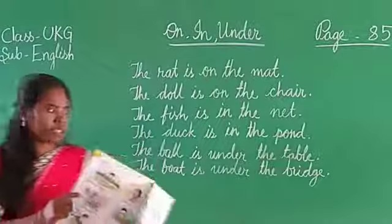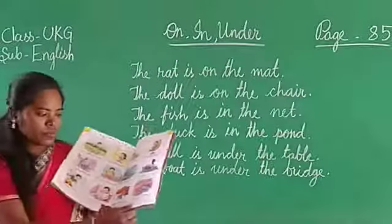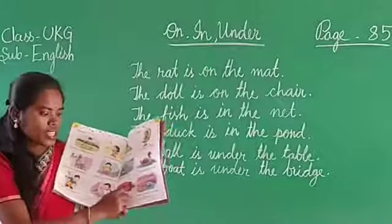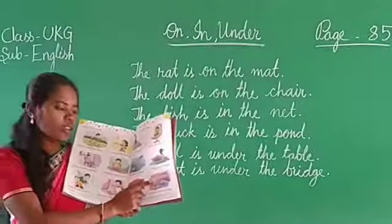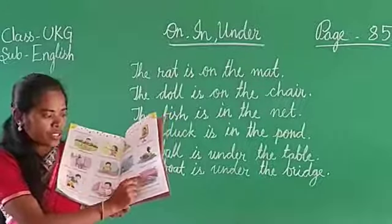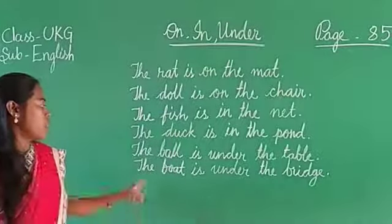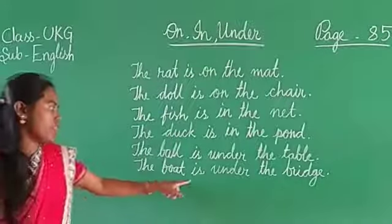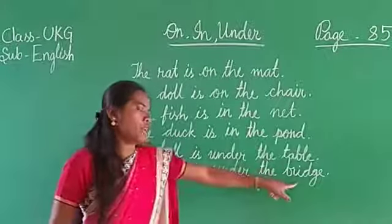Next, what do you see here? A bridge. And under the bridge, what do you see? A boat. So here it is written: the boat is under the bridge. Please repeat: the boat is under the bridge.